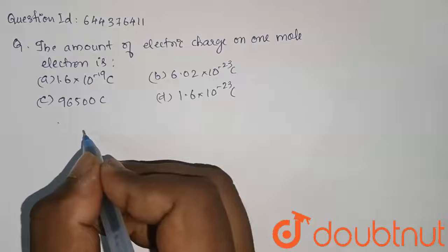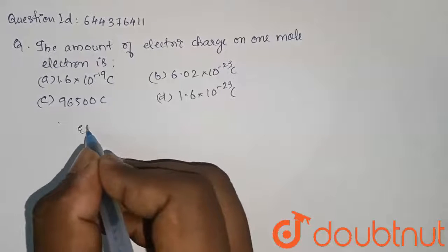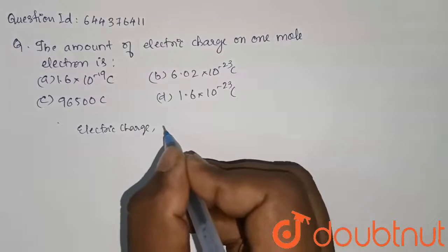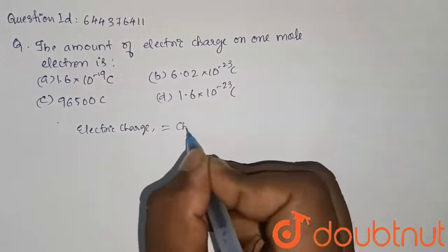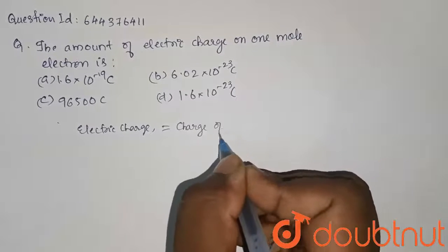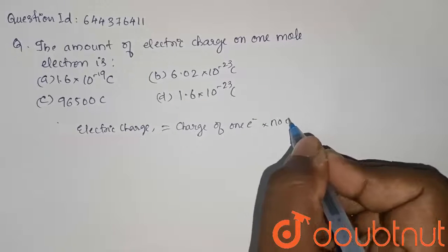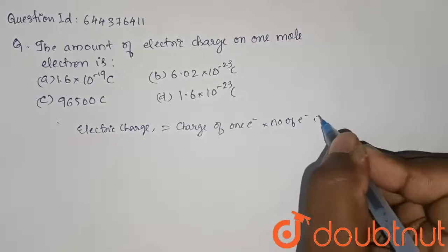Let us directly write the formula. What we need is the electric charge, which can also be written as Q, is equal to charge of one electron into number of electrons in one mole.